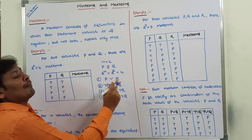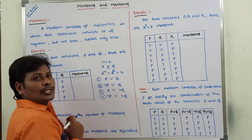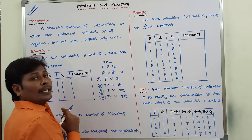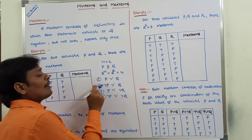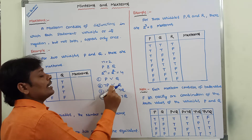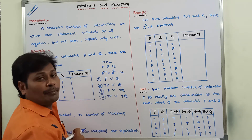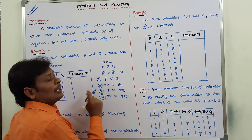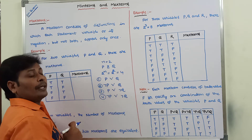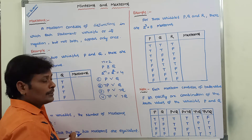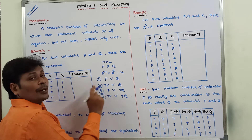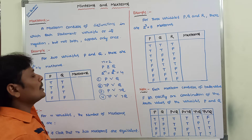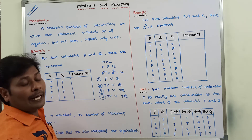For n equal to 2, four max terms are possible. In the first max term, both variables are taken in normal form: variable p and variable q. In the second max term, negation p and q are connected by OR. In the third max term, normal variable p and negation q are connected by OR. In the fourth max term, negation p and negation q are connected by OR.